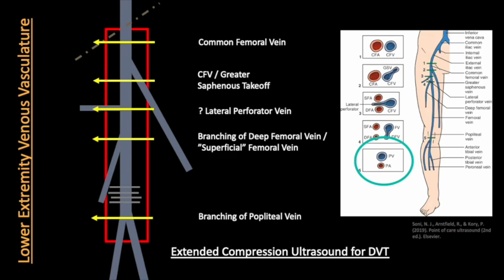The image on the right, taken from the point-of-care ultrasound text by Soni and others, is one I really like. In general, it reminds us that the veins in the lower extremity will run medially or deep to the arteries, with the notable exception of the popliteal vein. Let's take a look at some example images.